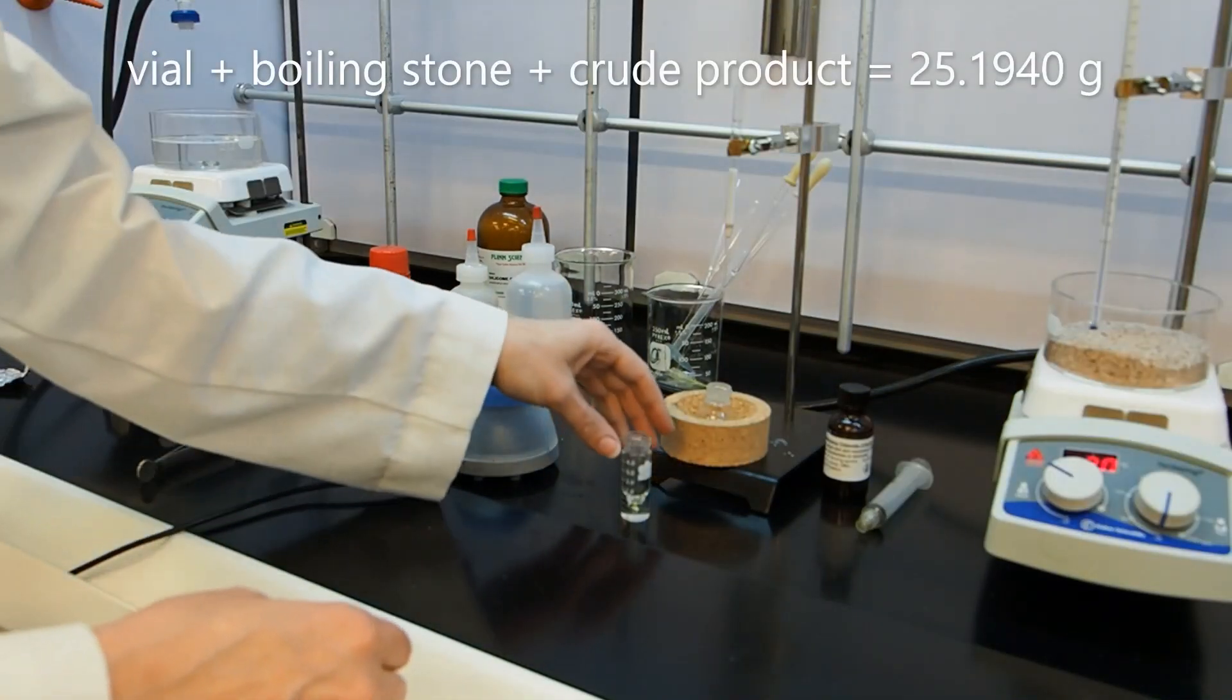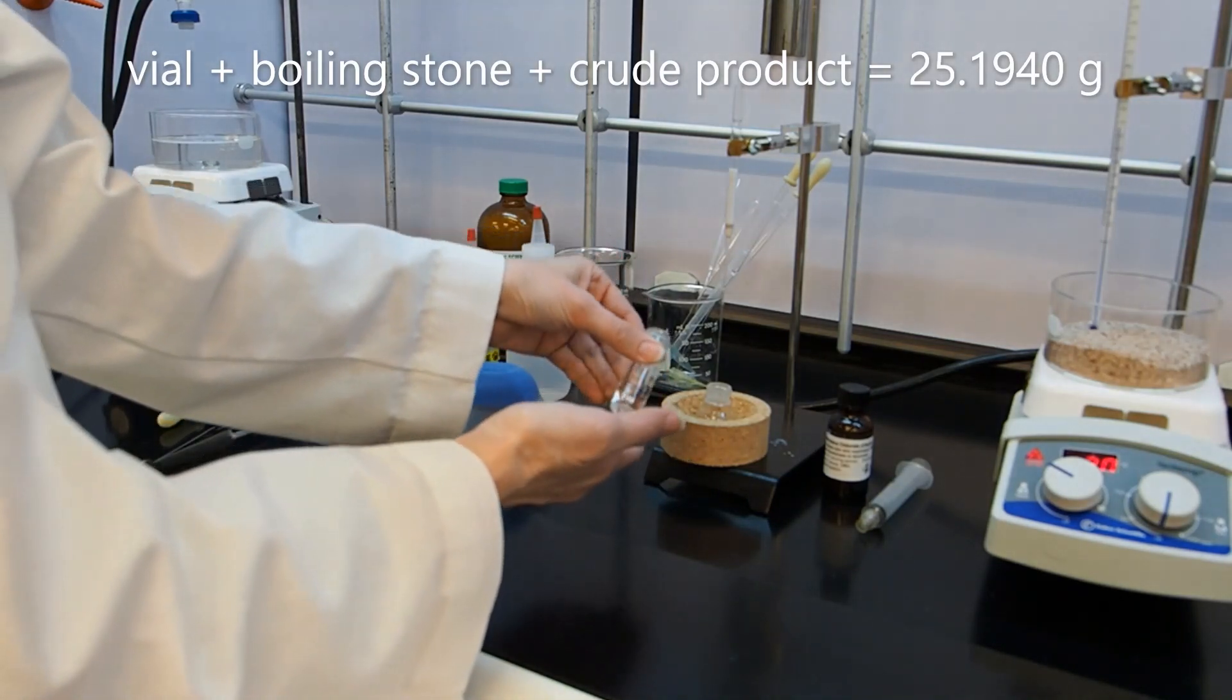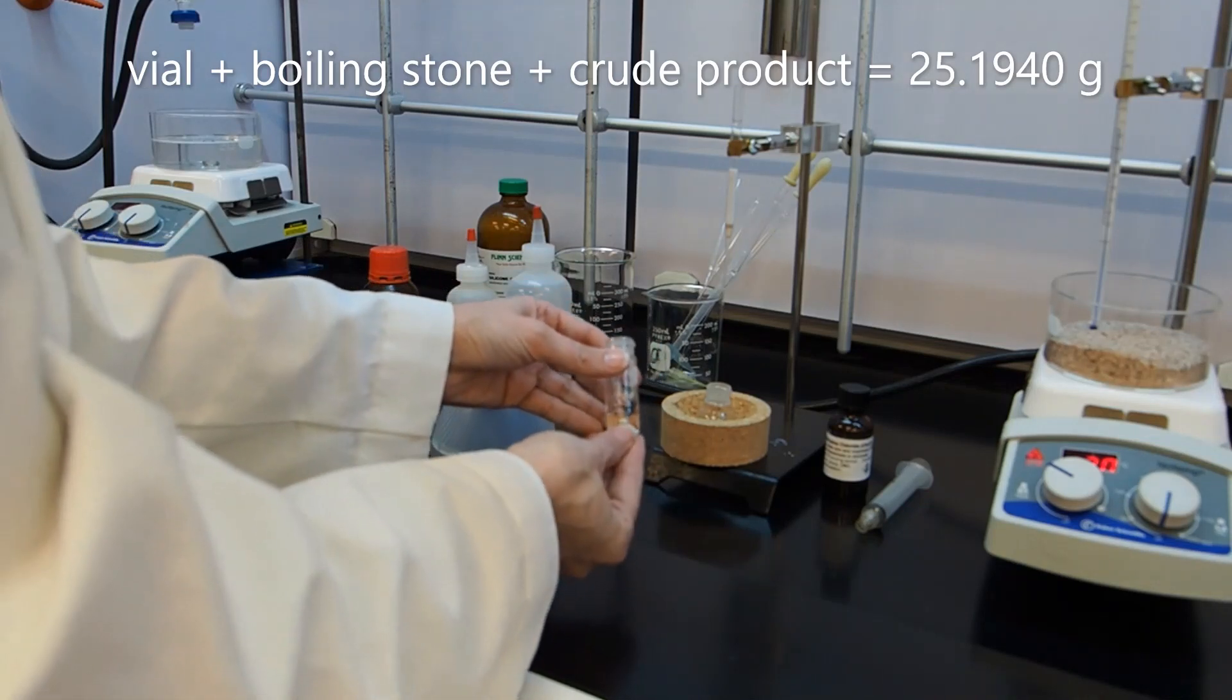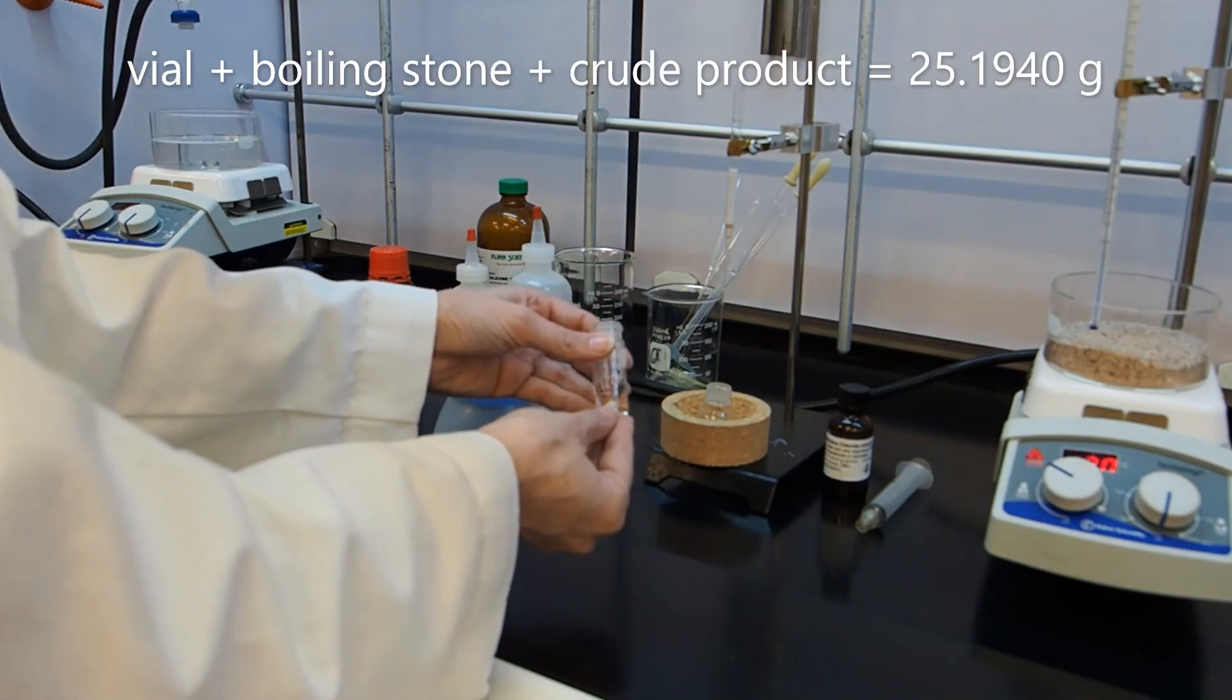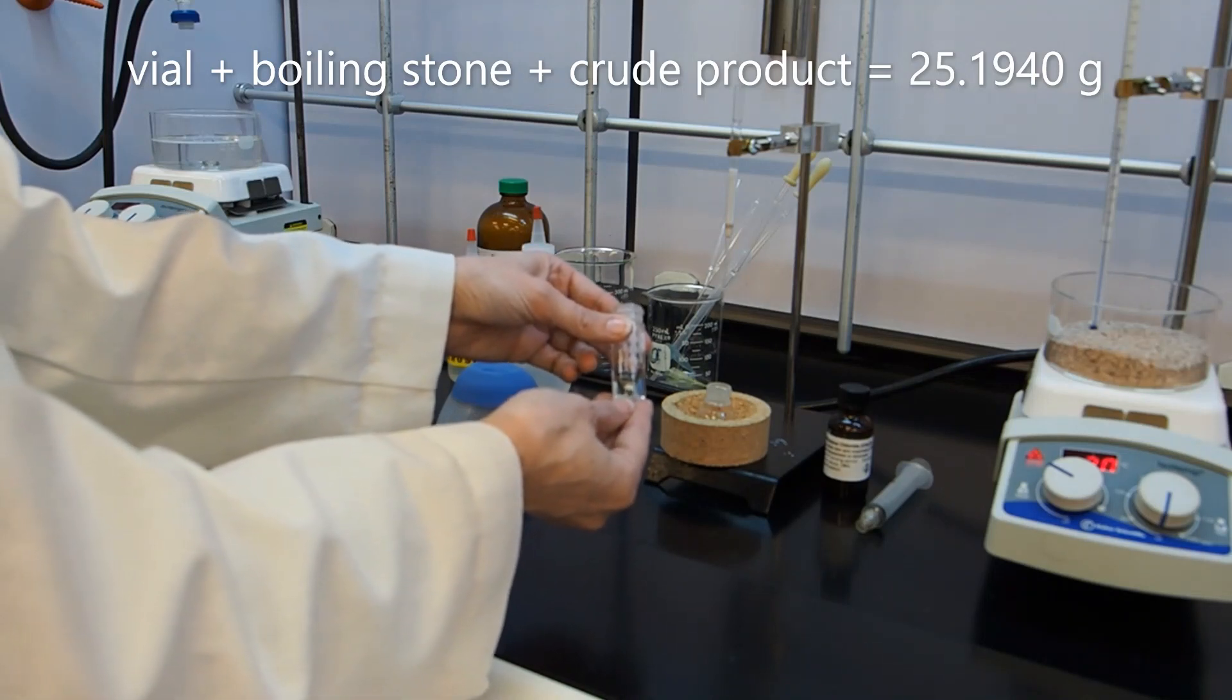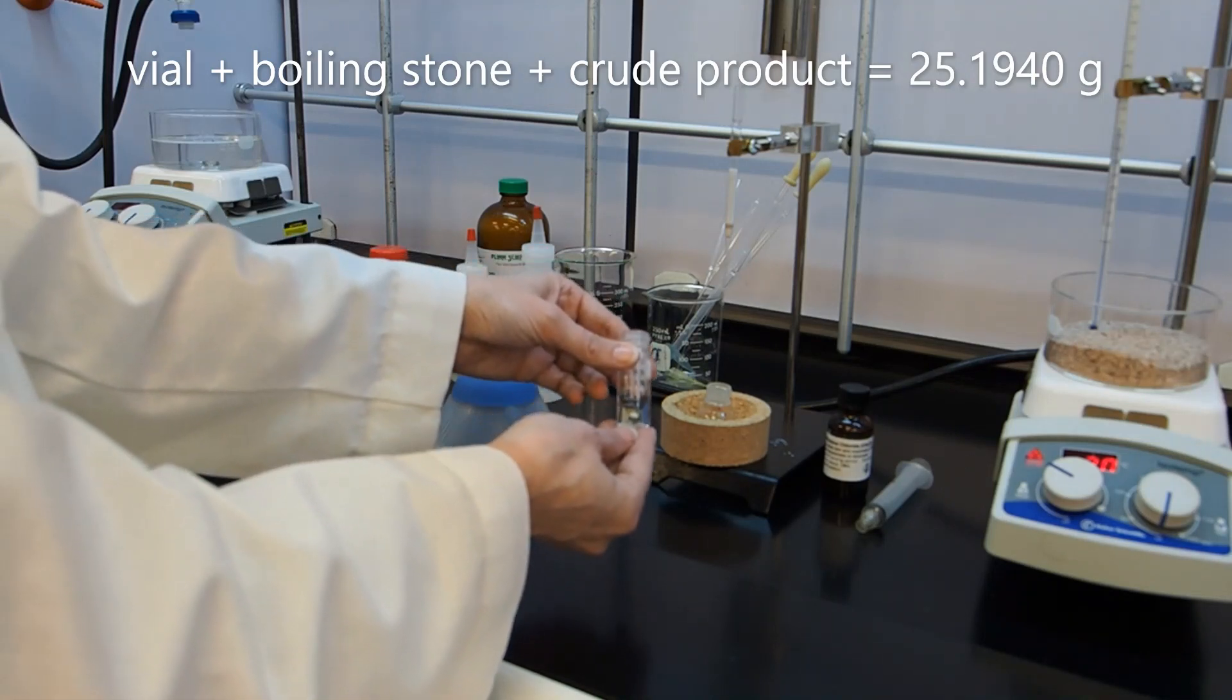So I have evaporated all of the ether and gotten my crude product. The weight of the vial plus the boiling stone plus the crude product is 25.1940 grams.